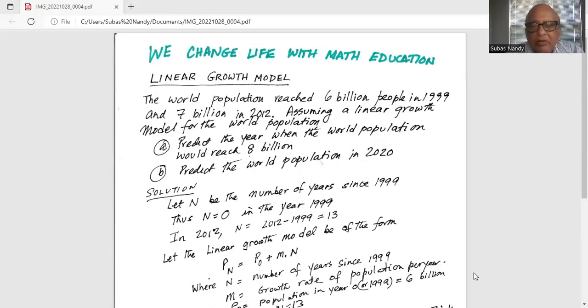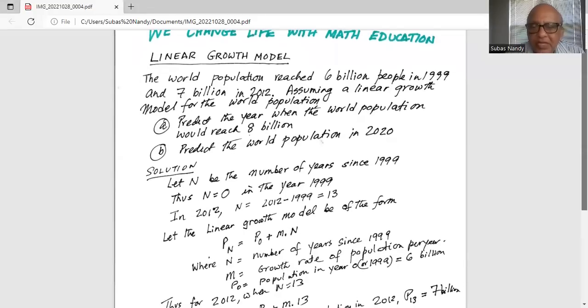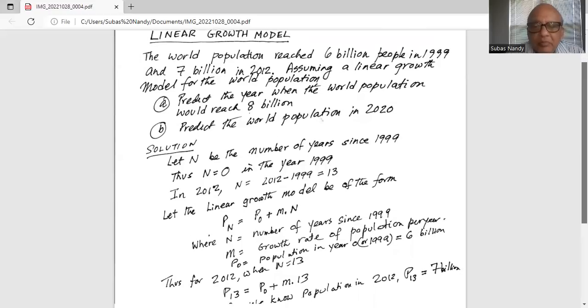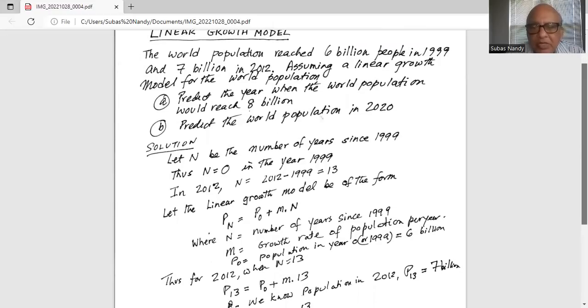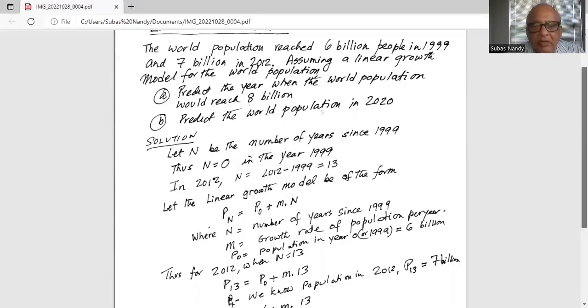Let the linear growth model be of the form Pn equal to P0 plus m times n, where n is the number of years since 1999. M is the growth rate of population per year. P0 is the initial population in year 1999, which is 6 billion.